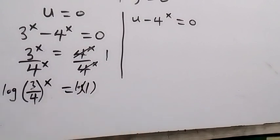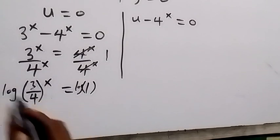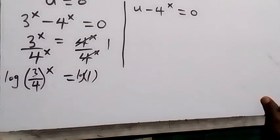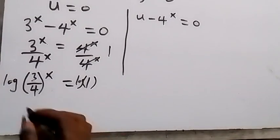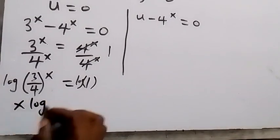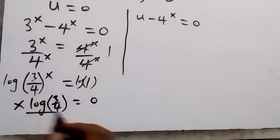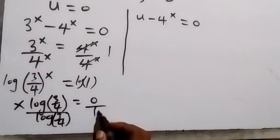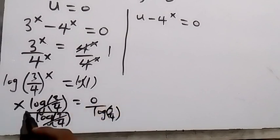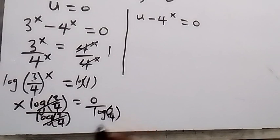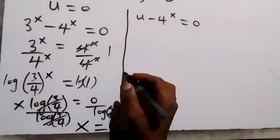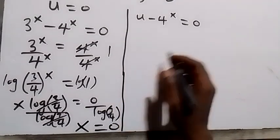Taking the log of both sides and applying the power law, we get x·log(3/4) equals log(1) which is 0. Dividing both sides by log(3/4), we get x equals 0. So the first solution is x = 0.